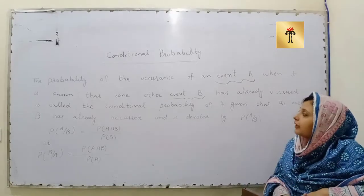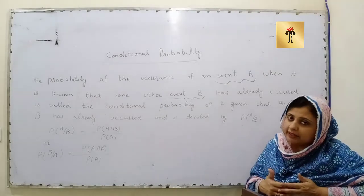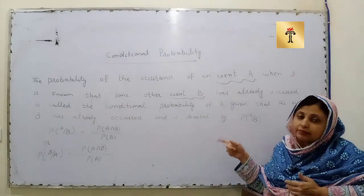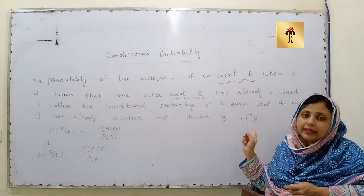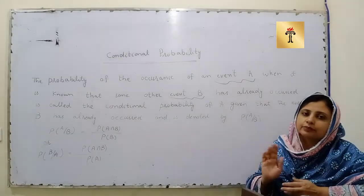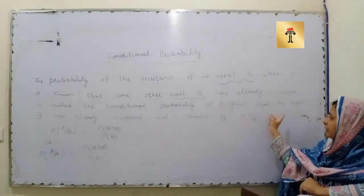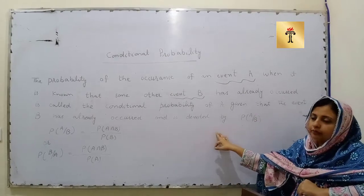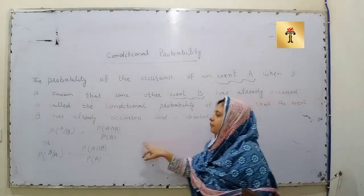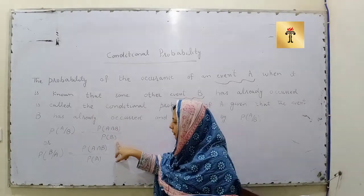According to the definition, the probability of occurrence of event A, when it is known that some other event B has already occurred, is called conditional probability. Conditional probability of A given that event B has already occurred is noted as P(A|B), and is formulated as: P(A|B) = P(A∩B) / P(B).